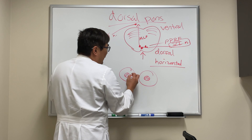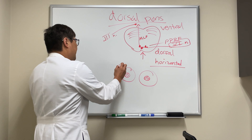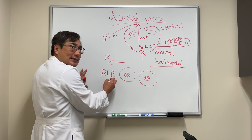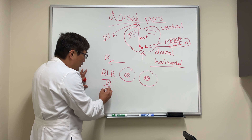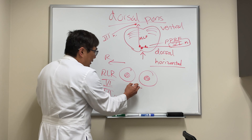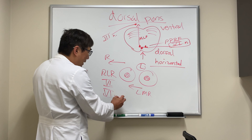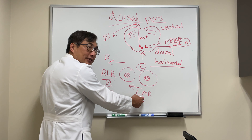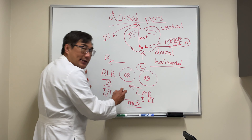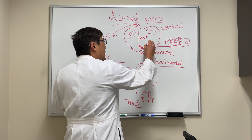So when we want to look to the right, for example in this patient, we're going to have to fire the right lateral rectus muscle — that's going to be from the sixth nerve fascicle controlled by the sixth nerve nucleus. But in the left eye, we also have to fire the left medial rectus muscle at the exact same time. That means the sixth nerve nucleus has to talk to the third nerve nucleus on the contralateral side via the medial longitudinal fasciculus.